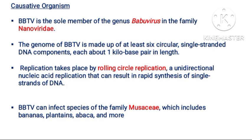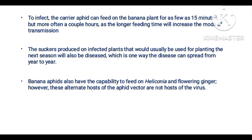Causative organism: Banana Bunchy Top virus is the sole member of genus Babuvirus in the family Nanoviridae. The genome of Banana Bunchy Top virus is made of at least six circular single-stranded DNA components, each about one kilobase pair in length. Replication takes place by rolling circle replication, a unidirectional nucleic acid replication that can result in rapid synthesis of single-stranded DNA. The aphid vector can feed on banana plant for as few as 15 minutes, but more often a couple of hours.